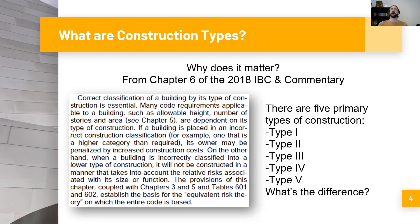So why is this an important topic? The commentary provides the following insight: "Correct classification of a building by its type of construction is essential. Many code requirements applicable to a building, such as allowable height, number of stories, and area, are dependent on its type of construction. If a building is placed in an incorrect construction classification — for example, one that is a higher category than required — its owner may be penalized by increased construction costs. On the other hand, when a building is incorrectly classified into a lower type of construction, it will not be constructed in a manner that takes into account the relative risks associated with its size or function. The provisions of this chapter, coupled with chapters three and five and tables 601 and 602, establish the basis for the equivalent risk theory on which the entire code is based." So obviously, this is a very important thing to get right. You really want to make sure that your construction type is correctly classified.